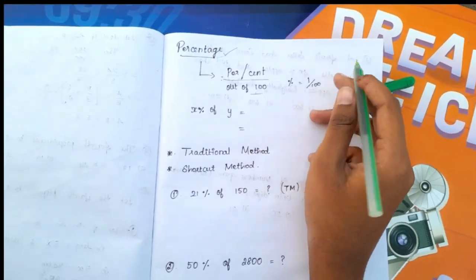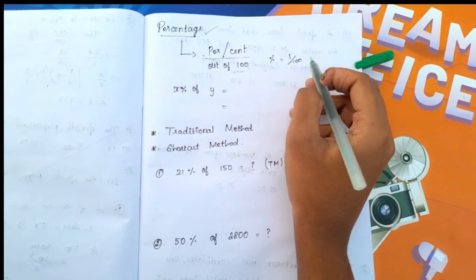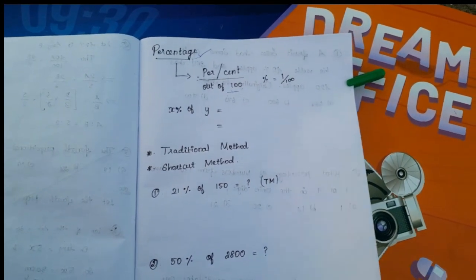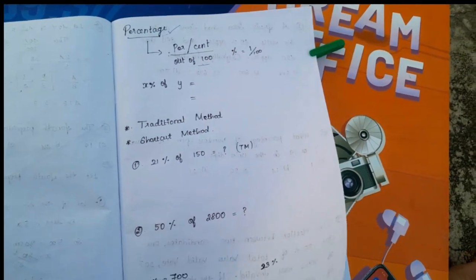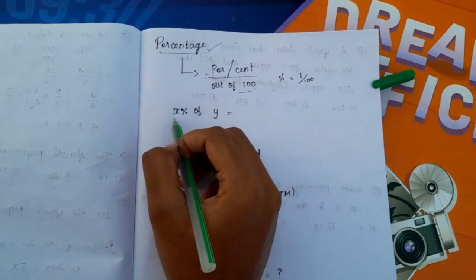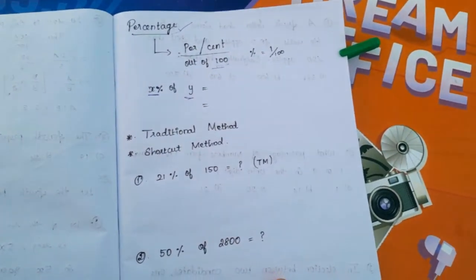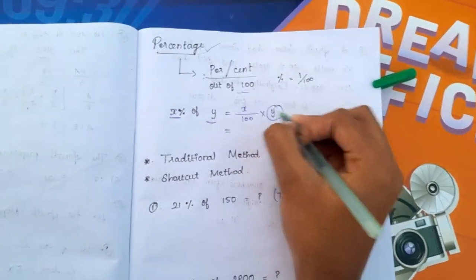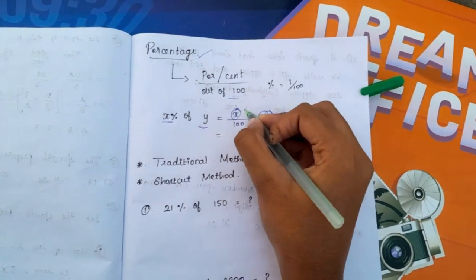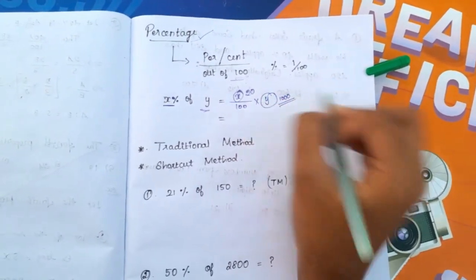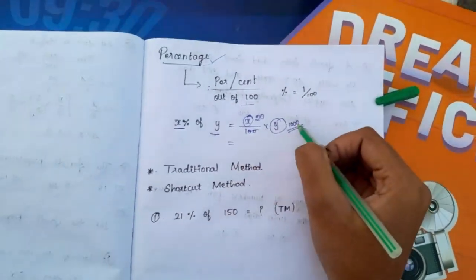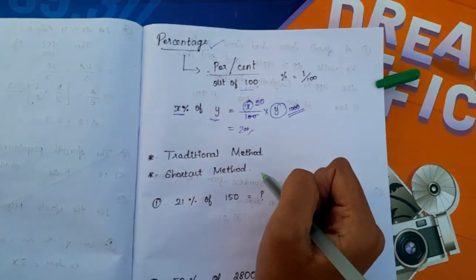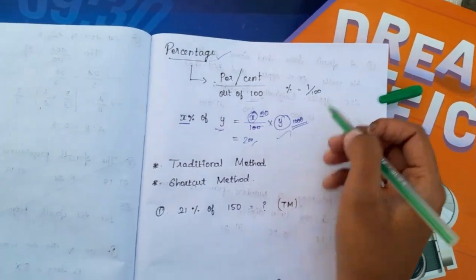If we are going to talk about the amount of a dress, we will talk about the percentage discount. So the percentage discount on the dress — the discount amount is calculated as: percentage of y is x divided by 100 into y. You can get 20% discount. So if we calculate, we have an answer — 200 is the discount price. This is the traditional method.